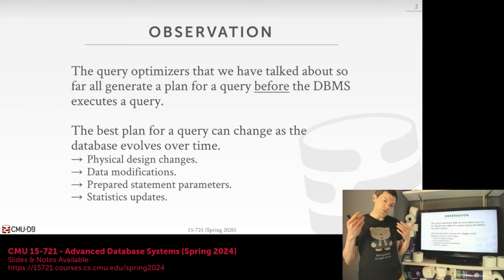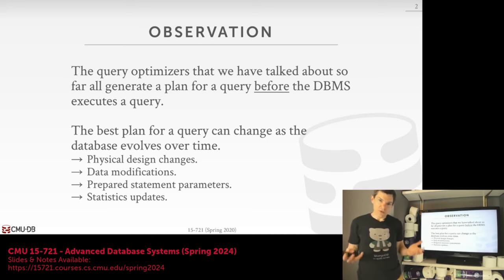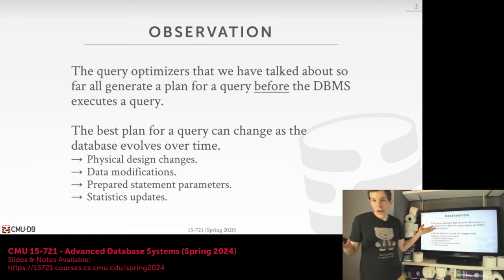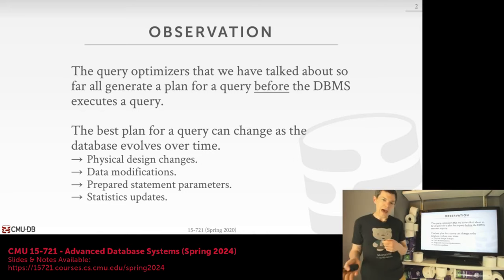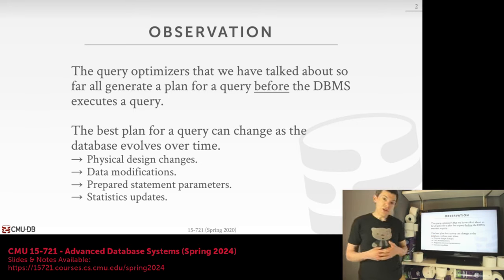Since we can't actually run the query without a plan, there are some assumptions we have to make about what the database and our environment looks like. But these things can change over time. The physical design of the database can change because the administrator could add and drop indexes or change the partitioning scheme. The database itself could get modified — people could insert or delete tuples, which could change the distribution of values for our columns.